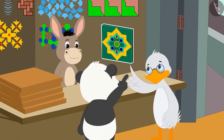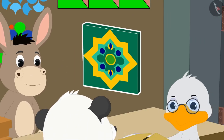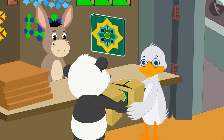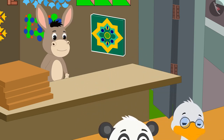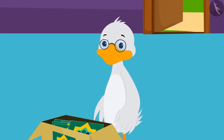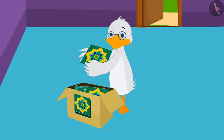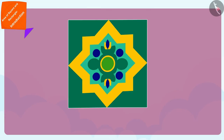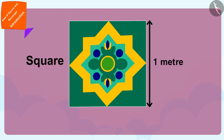Both uncle and Golu like the tiles of this design, and both bought the tiles for their respective homes. After reaching home, uncle started laying down the tiles. Each tile is square in shape and its edges are one meter long.